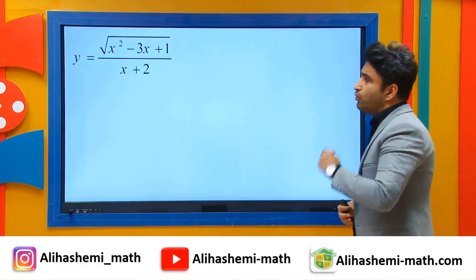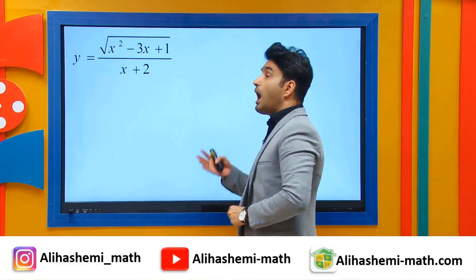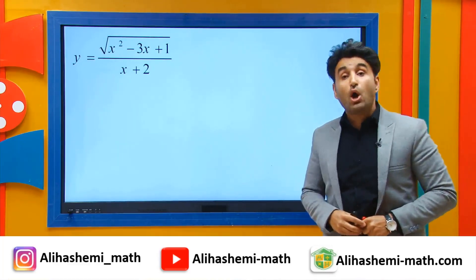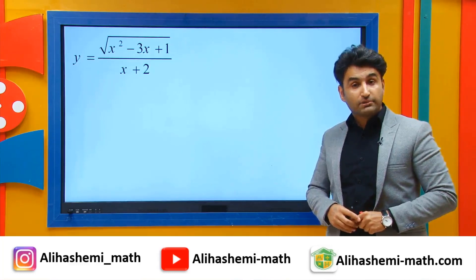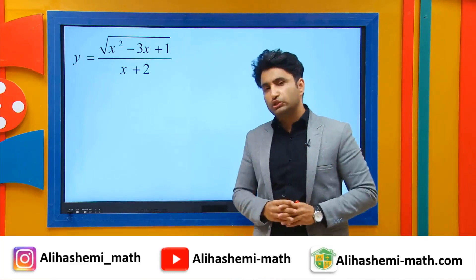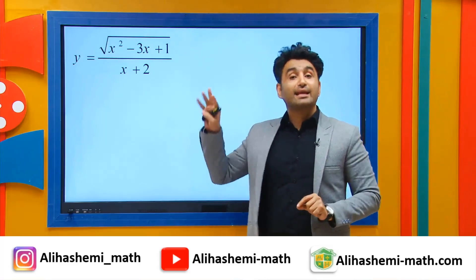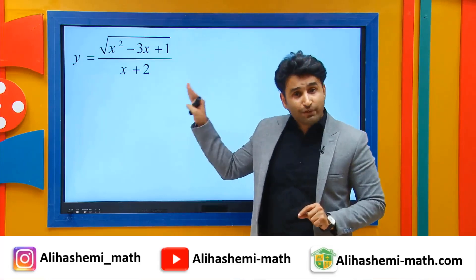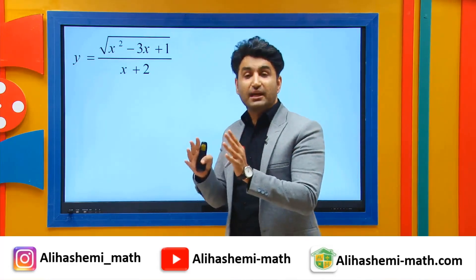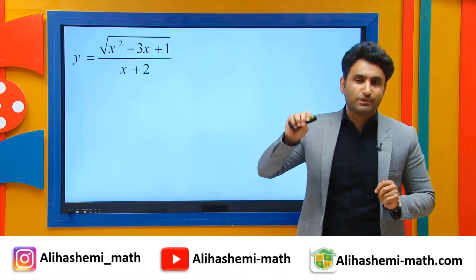y equals the square root of x squared minus 3x plus 1 on top, and x plus 2 on the bottom. Find the horizontal asymptotes of this function. The only thing you need to do is evaluate the limit of this function as x approaches infinity. The answer will be the horizontal asymptote.